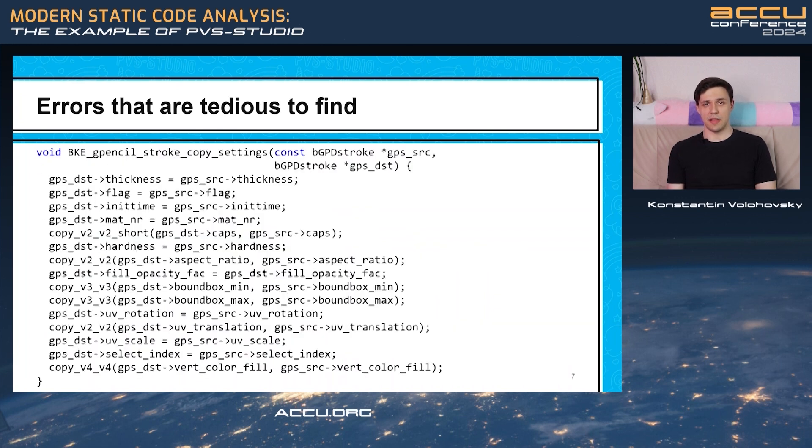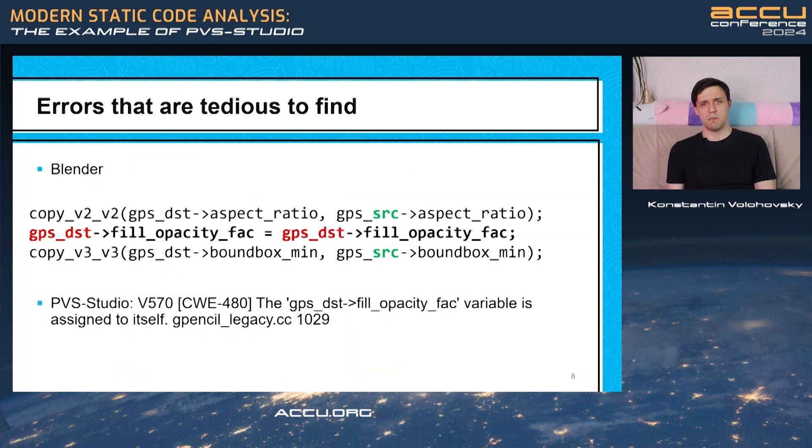Let's go to the error from the Blender project. There are errors that you don't really want to look for because it's very boring to search for them. You can look at this method and tell that it copies one object into another. And you probably don't want to examine every single line of that code. But you better do so, because in just one line, the object field is assigned to itself.